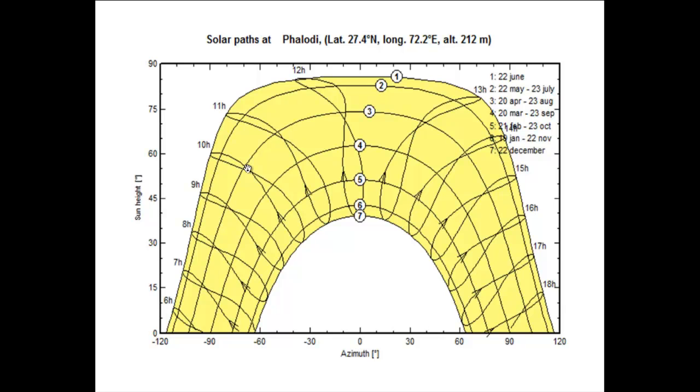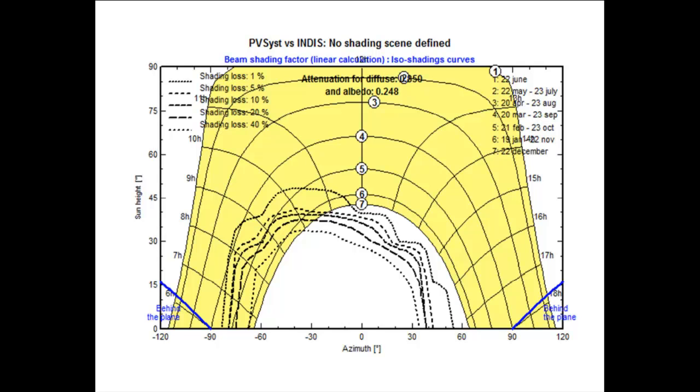So why do we use this diagram, this chart? By using this, we can actually find the area which will be shaded, the time for which the particular module will be shaded because of the surrounding objects. I'll show you a small layout in PVSys. After that we can come to this picture again.